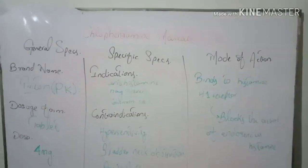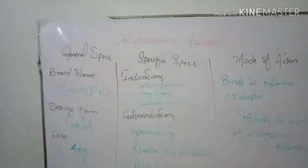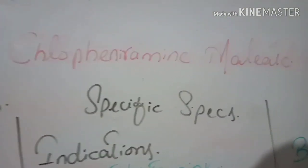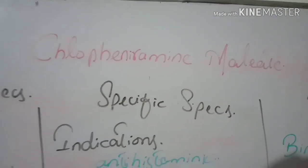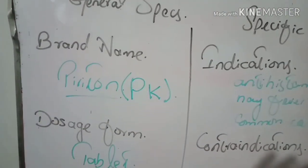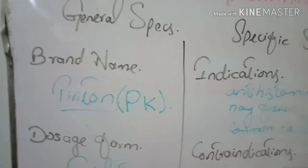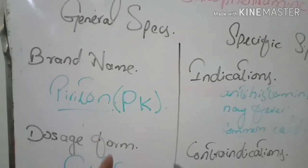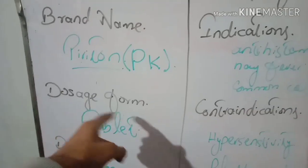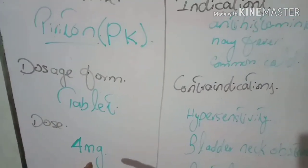First, the general specifications of chlorpheniramine maleate: The brand name is Piritone, used in Pakistan. The dosage form is a tablet, and the dose is four milligrams.